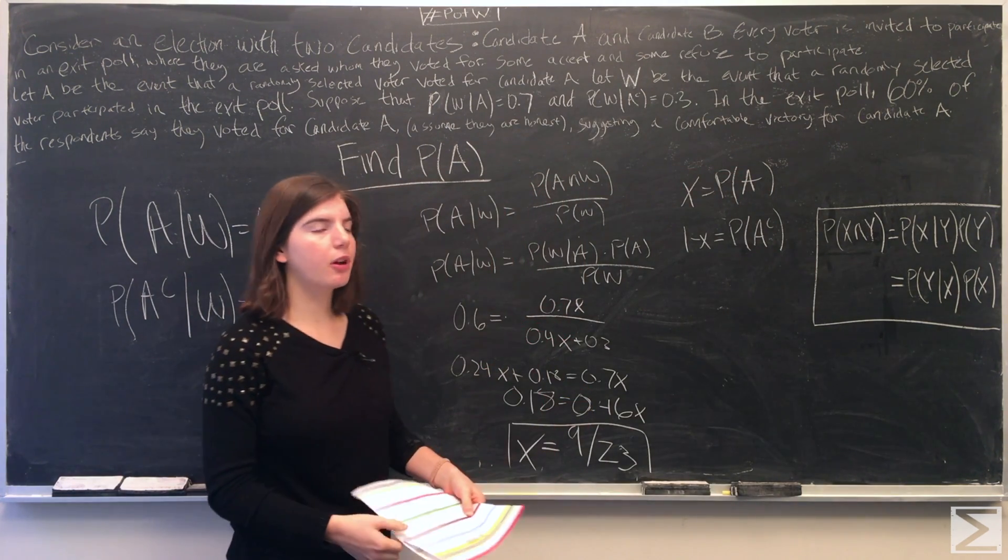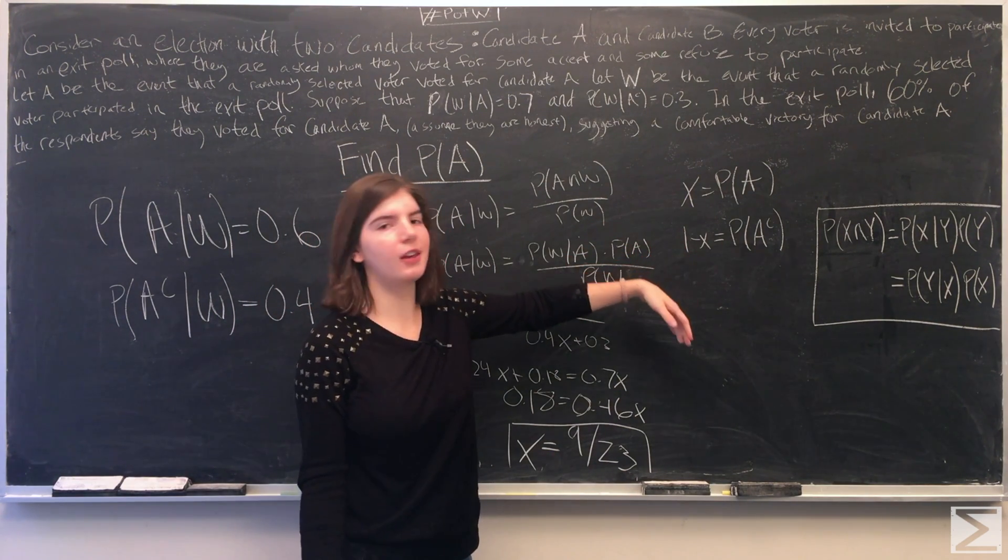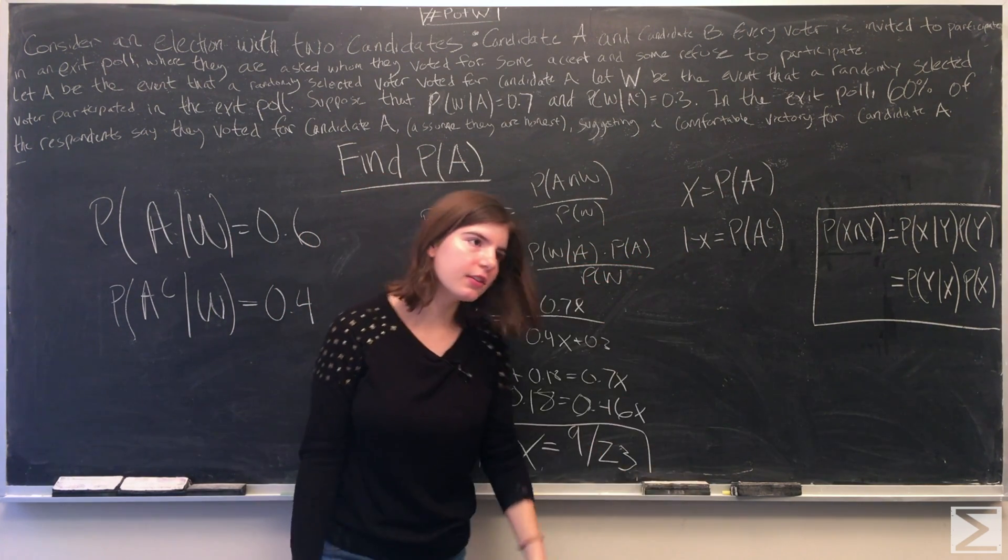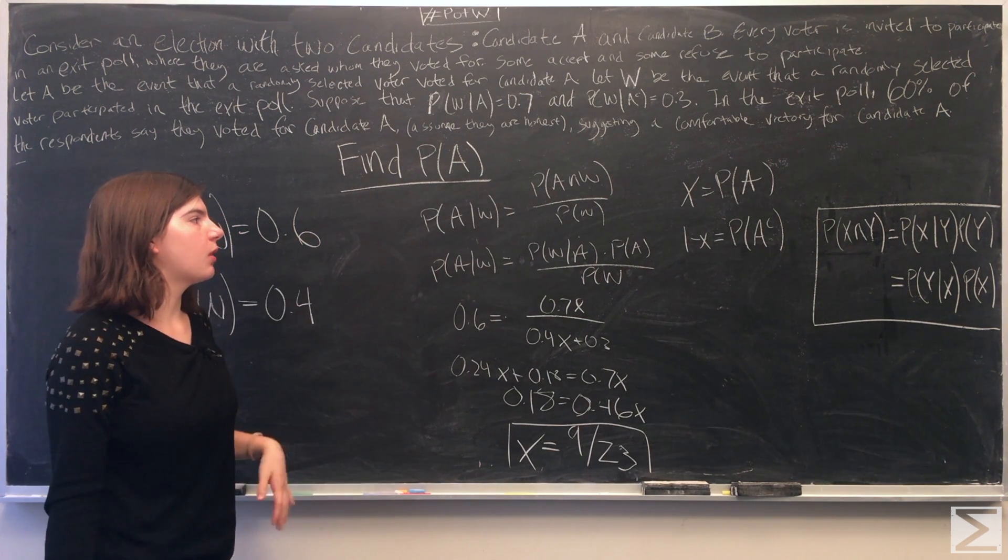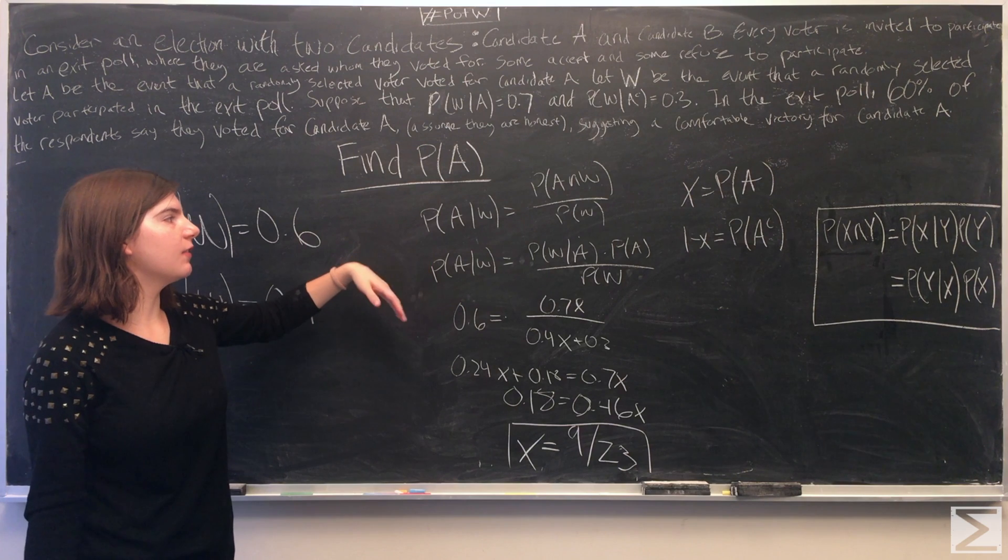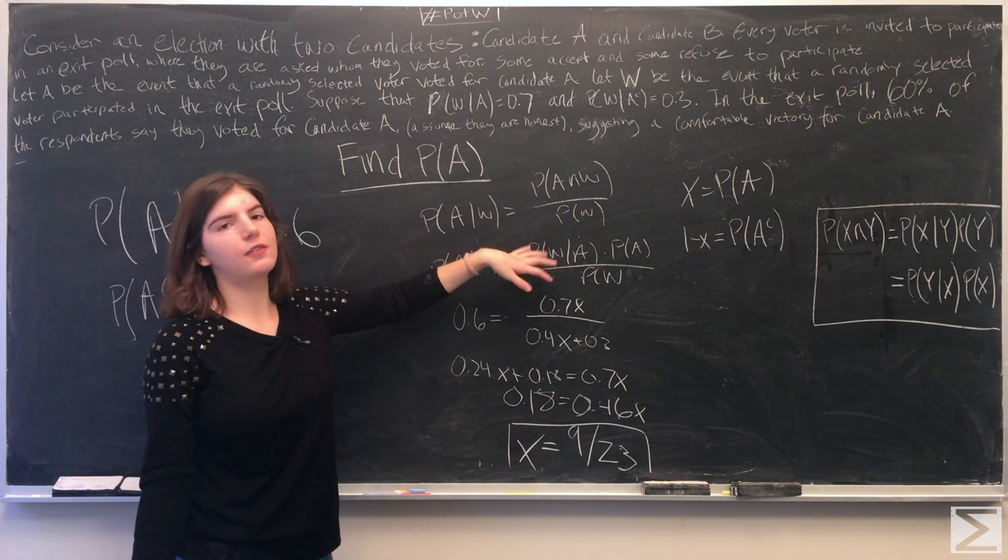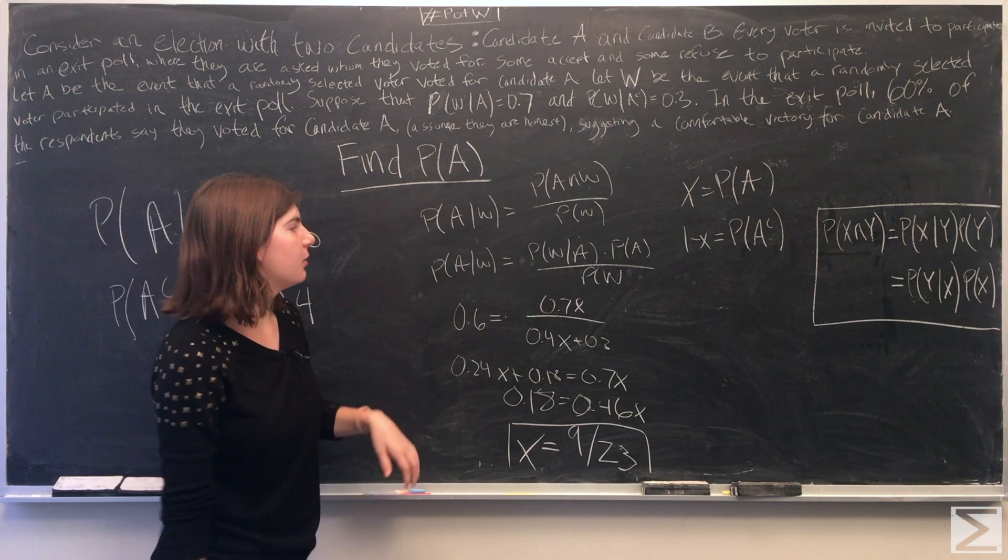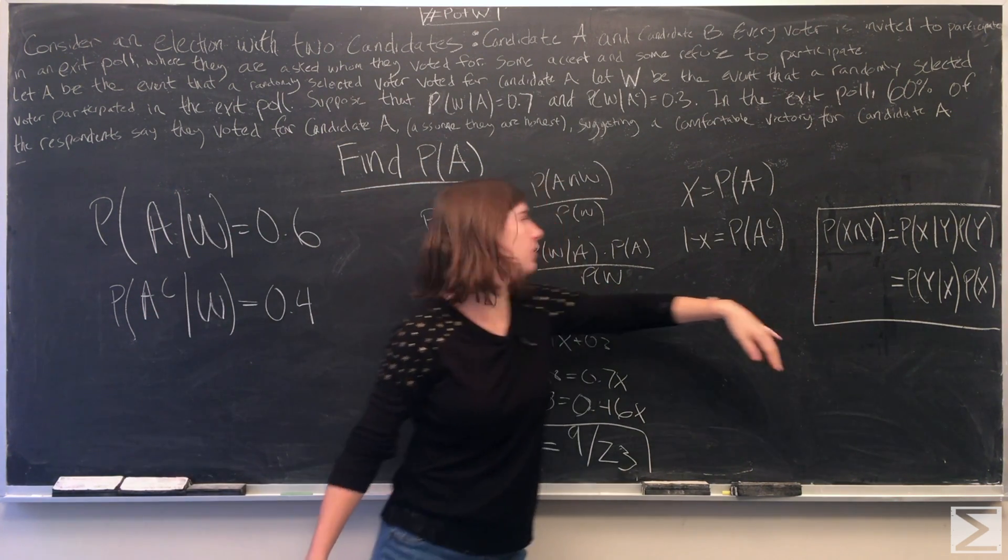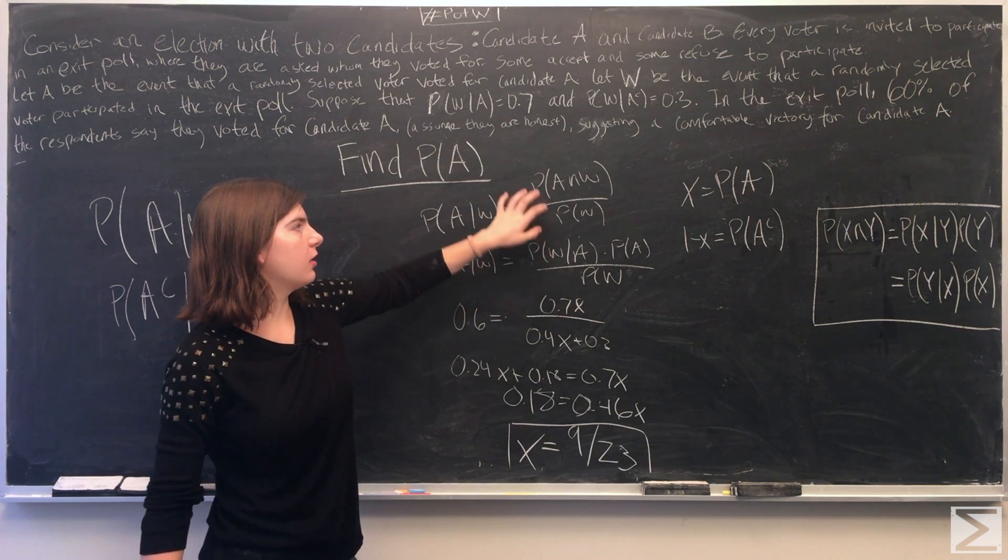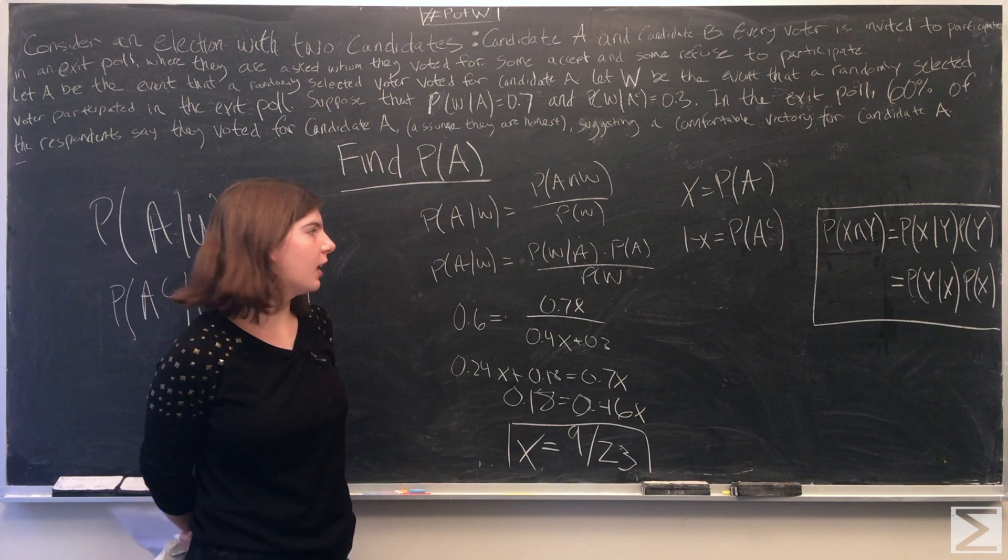Since we're trying to solve for the probability of A, we'll let that equal X, which just means that the probability of A complement is 1 minus X. So using the equation for conditional probability, we have the probability of A given W is equal to the probability of their intersection divided by the probability of W, and we'll use this rule again to rewrite the intersection as the probability of W given A times the probability of A.